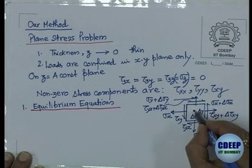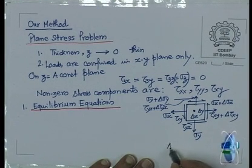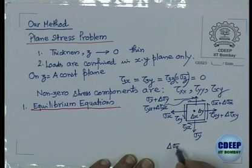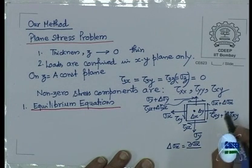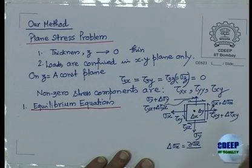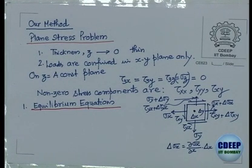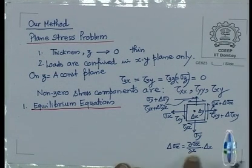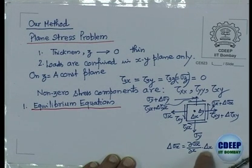All the deltas - for example, delta sigma x - will be the rate of change with respect to x multiplied by delta x. We are retaining only the first-order term in the Taylor expansion. This is the simplest first-order approximation - otherwise you would have to retain higher-order terms like delta x squared, delta x cubed. So we retain only the first-order term.